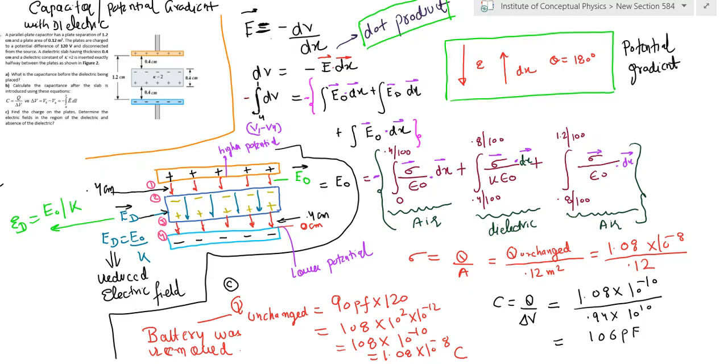When we apply this integration, we split the regions into three parts. The first part is the air part, which starts from the negative plate till the first surface of the dielectric. The second part of the integration is the dielectric length itself, which is 0.4 centimeters, and then the third part is the air part again.